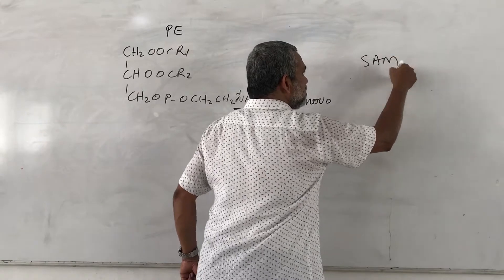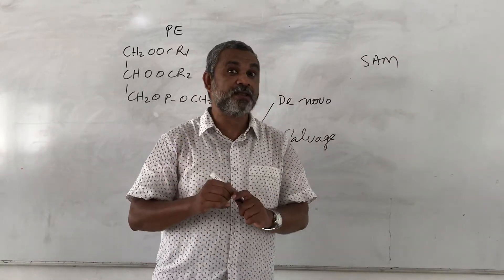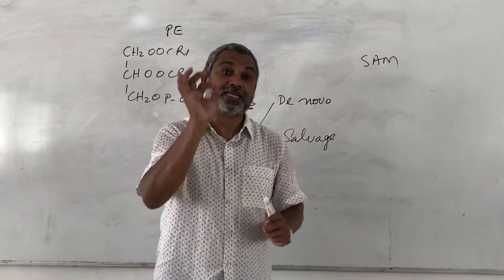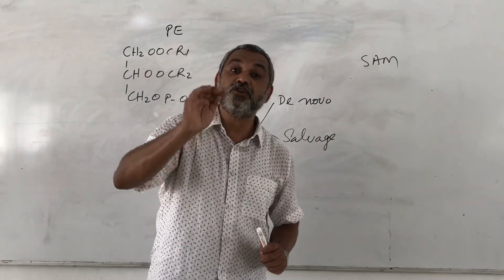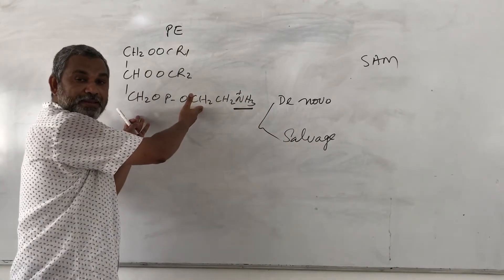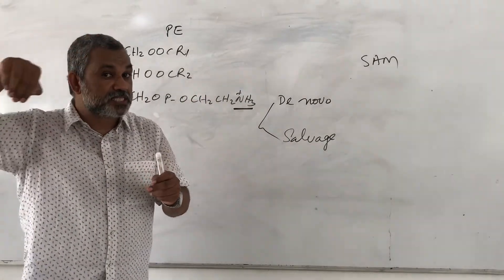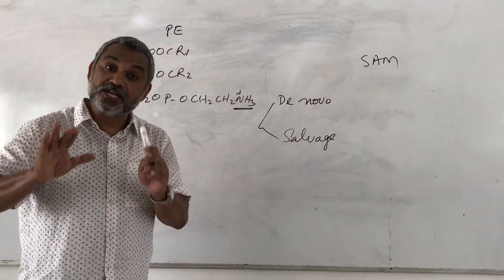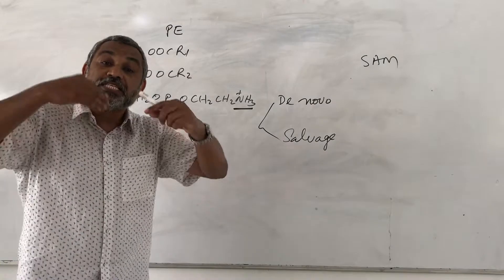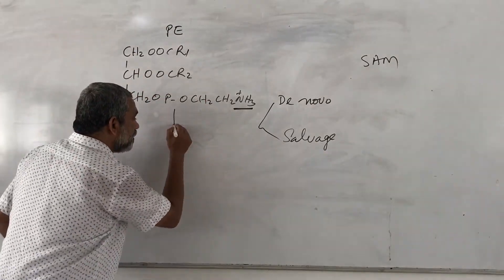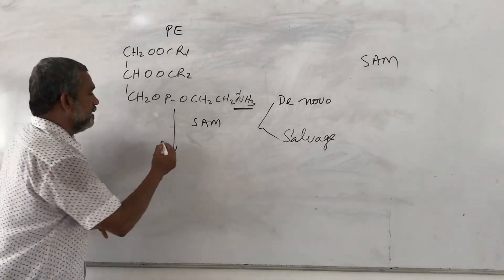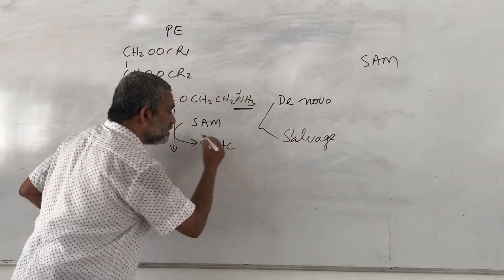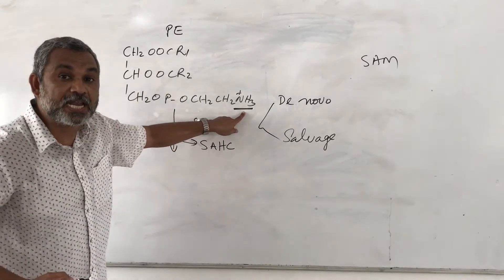S-adenosylmethionine is derived from methionine, which is an essential amino acid. Methionine has an activated methyl group attached to the sulfur, and this methyl group is donated to phosphatidylethanolamine. Once this methyl group is removed from SAM, it becomes devoid of the methyl group and is converted to S-adenosylhomocysteine. The methyl groups are attached one after the other — in the first step, one SAM adds a methyl group to phosphatidylethanolamine, generating S-adenosylhomocysteine.